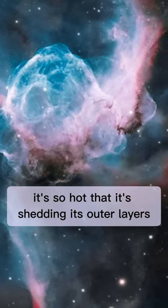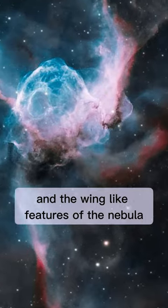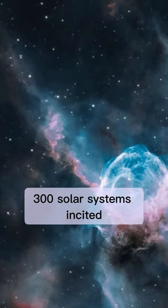It's so hot that it's shedding its outer layers at incredible speeds, creating the helmet-like shape and the wing-like features of the nebula. The nebula is about 30 light-years across, which means it could fit about 300 solar systems inside it.